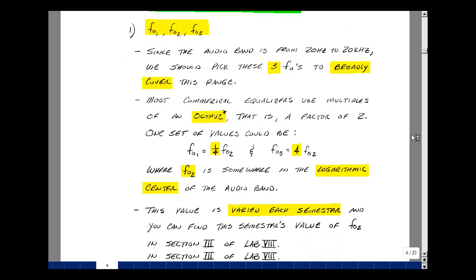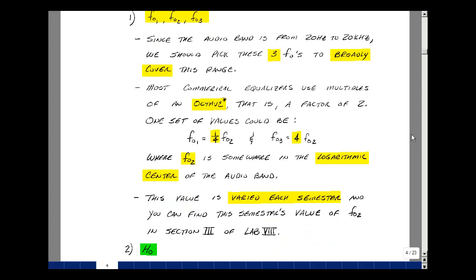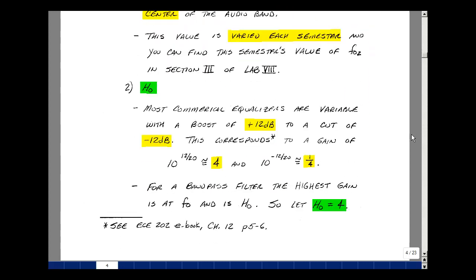The value of F naught two, I vary each semester so the design is different every semester. What about H naught? Let's look at a commercial equalizer. They typically have gains for boosting of 12 dB and cutting for minus 12 dB. 12 dB, if you divide that by 20 and make it the power of 10, is equal to four. Do the same thing for minus 12 dB, you get one quarter.